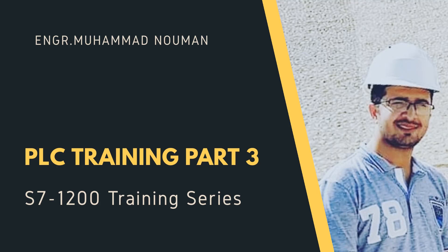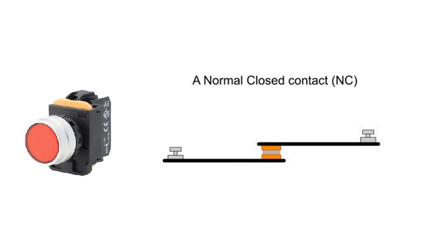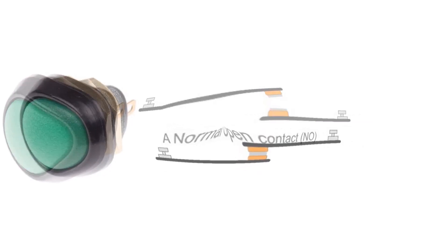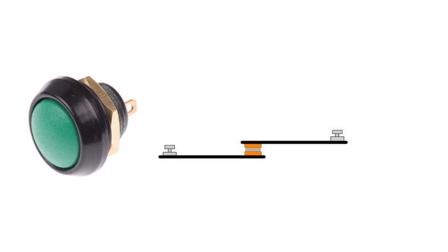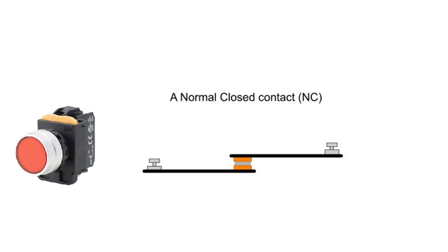We will be talking about NO and NC type of momentary push button. NO type of momentary push button looks like this and NC type looks like this. In NO — normally open — in normal condition we have an open circuit, so whatever device is connected, for example a light, in normal condition the light would be turned off because the circuit is open. When we press the button, the circuit completes and the associated device turns on.